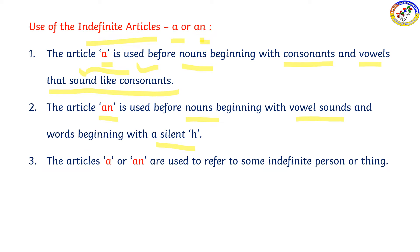So, the articles A and AN are used to refer to some indefinite person or thing. That means it is not definite — indefinite. A and AN refer to some indefinite person or thing.